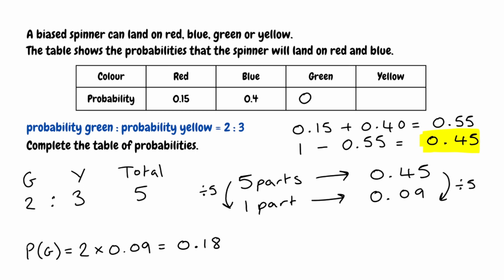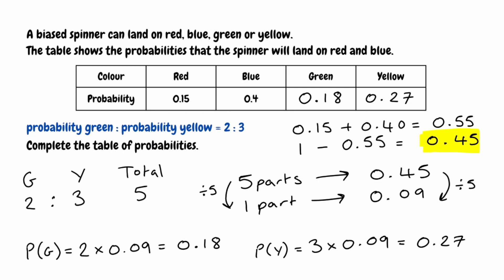We can write 0.18 in the table. For the probability of yellow, looking back at the ratio, yellow had three parts. So we do 3 multiplied by 0.09, and that gives us 0.27. So our probability for yellow is 0.27. The table is now complete. All of our probabilities add up to 1, and we can see that the probability of green to the probability of yellow is in the ratio of 2 to 3.